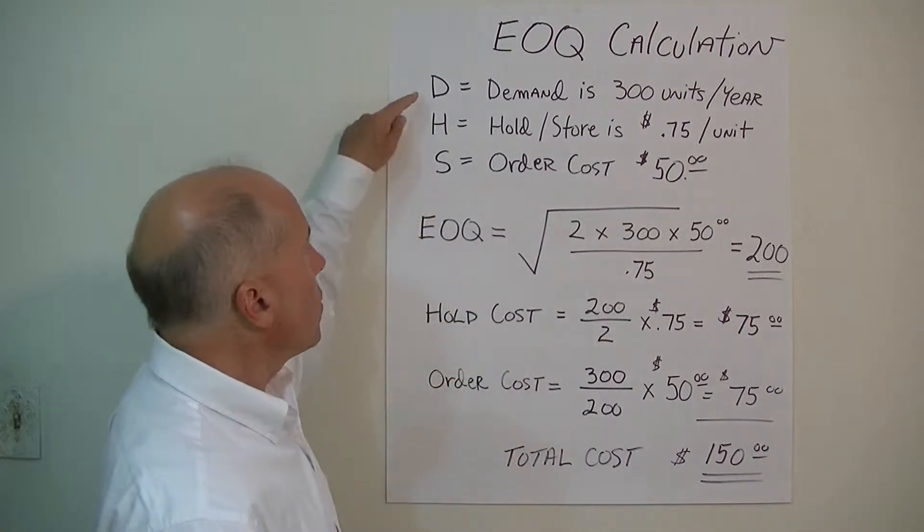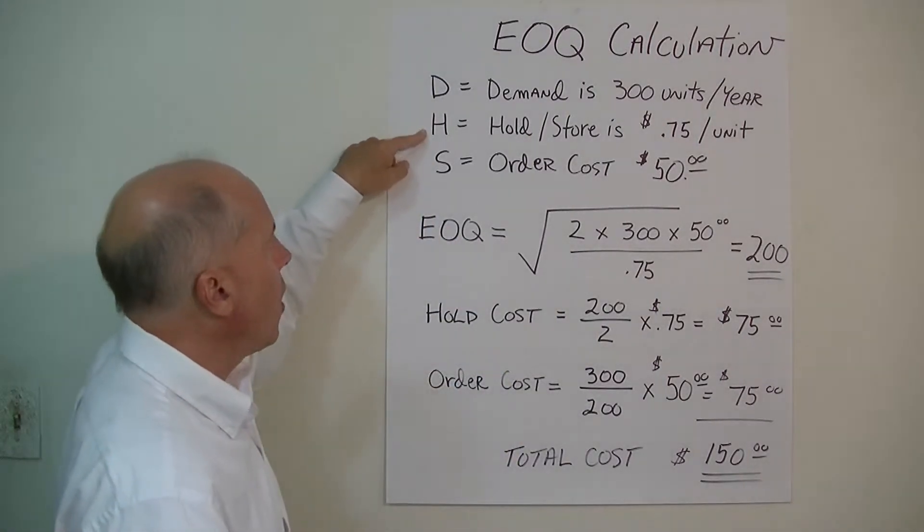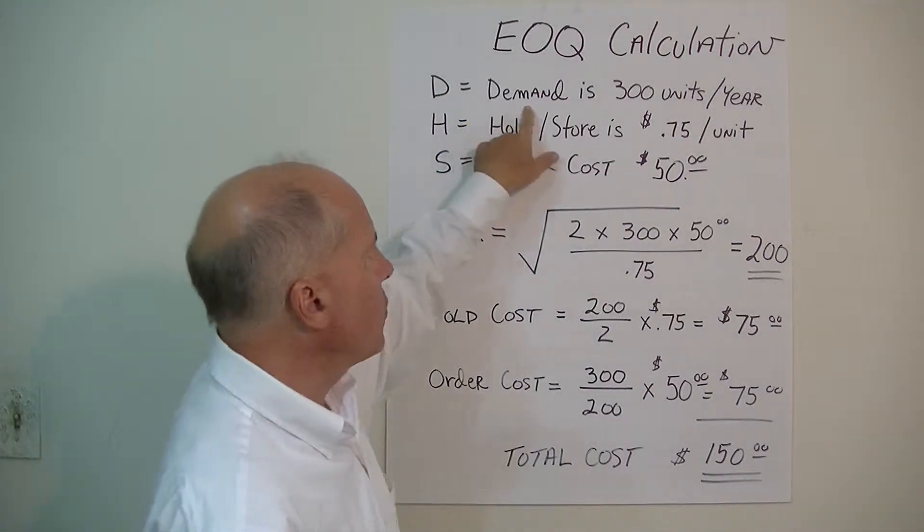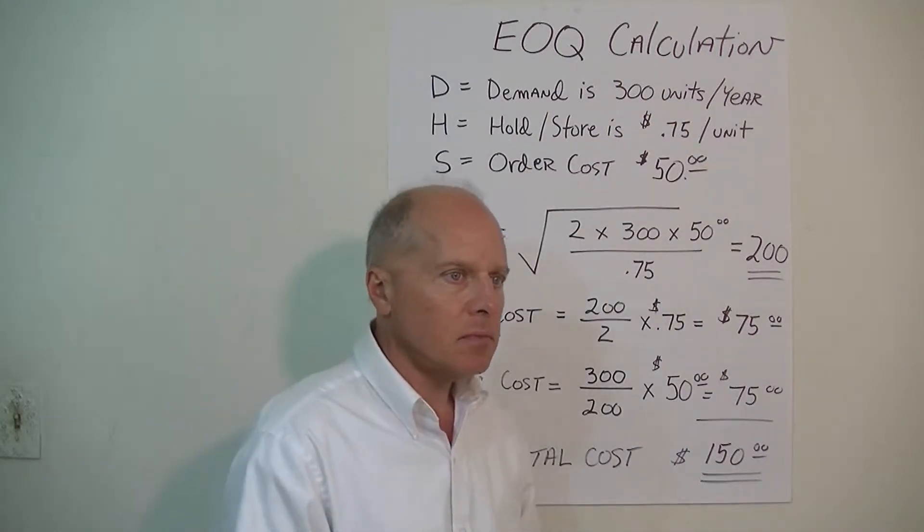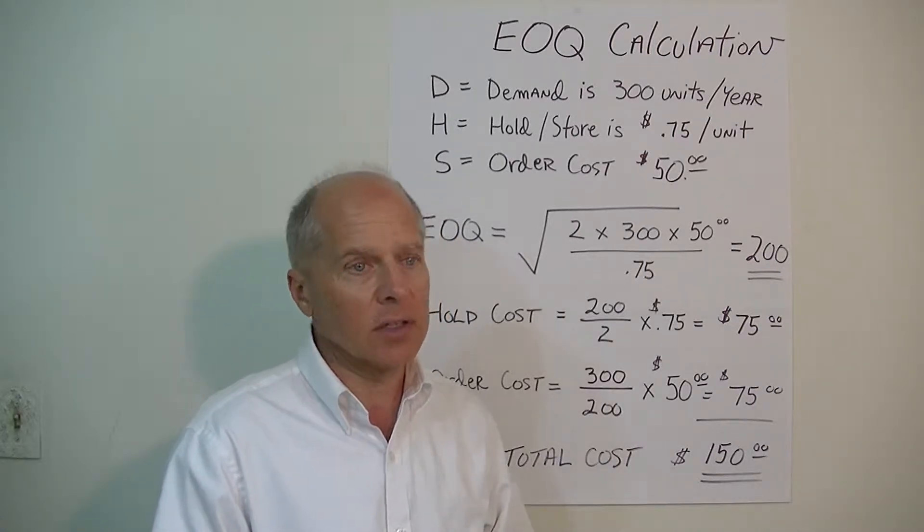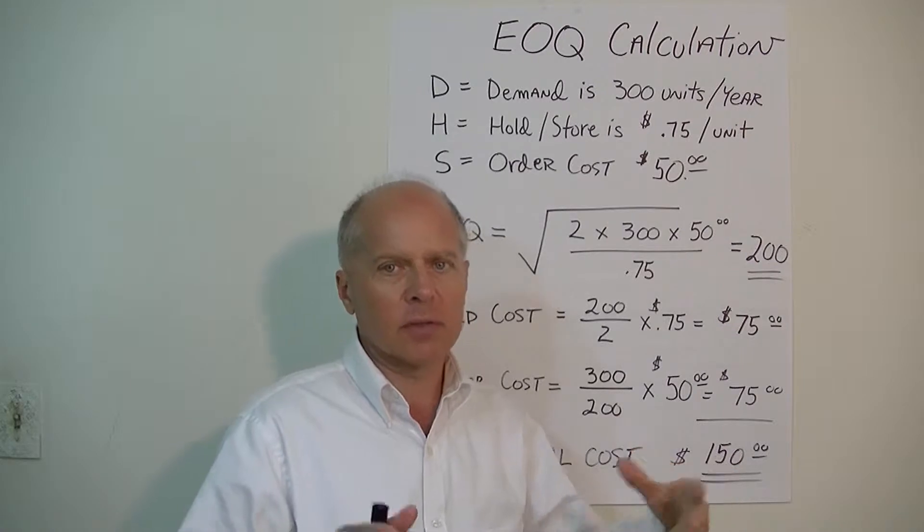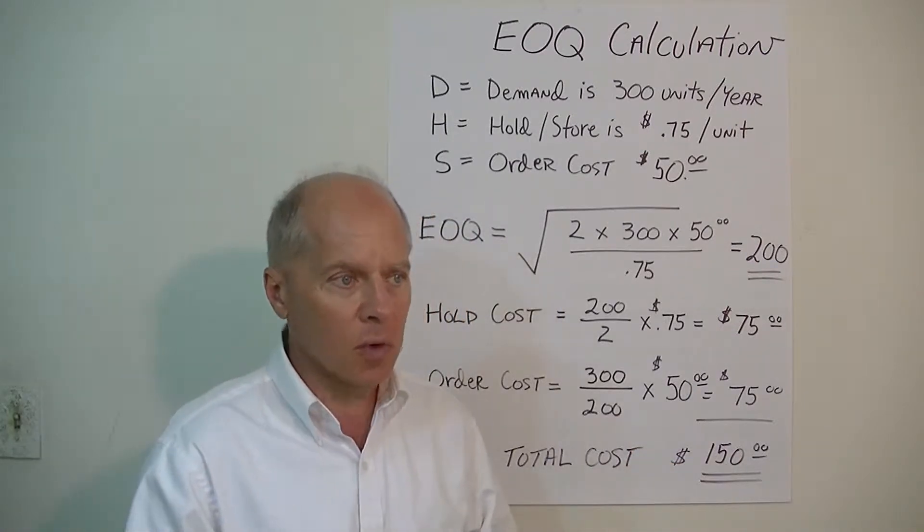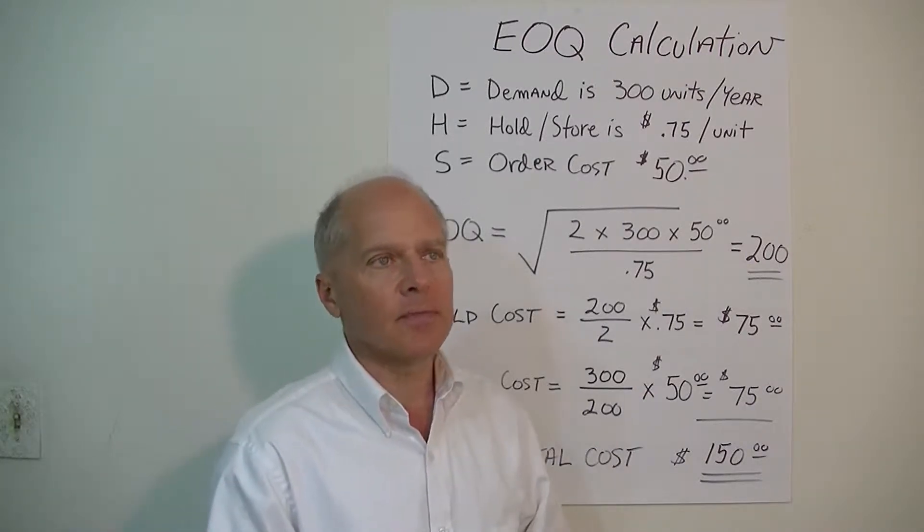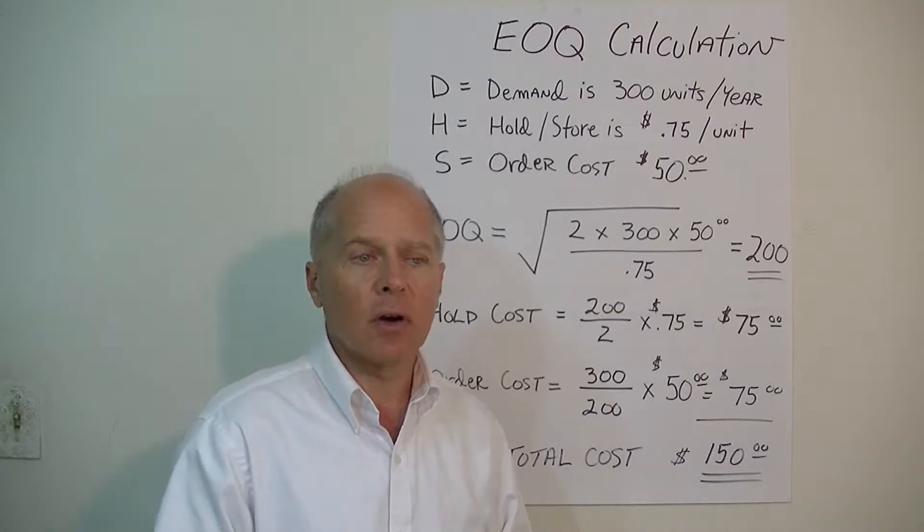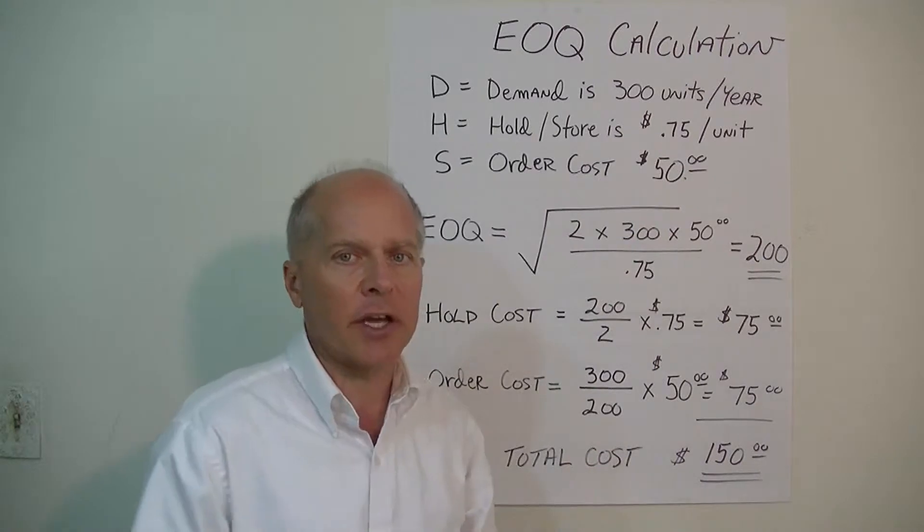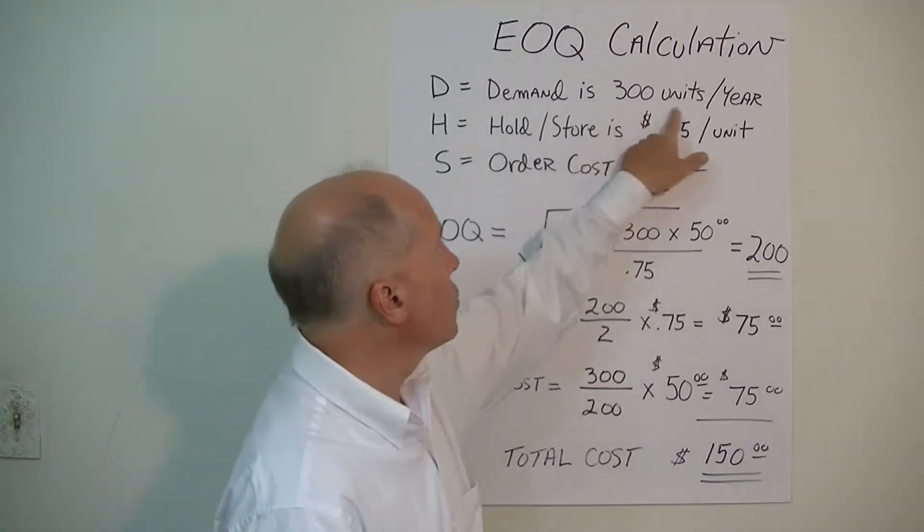What we need to know is the demand for the year, our holding costs, and our cost to order. Let's say we're selling industrial soap in a can. We don't sell a lot of these. They come in large tubs. We sell them in a hardware store, and the demand over the year is pretty even, constant. About 300 of these large cans of industrial soap will be sold during the year.